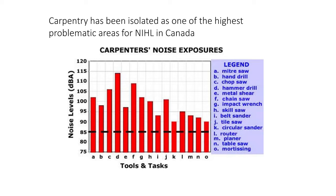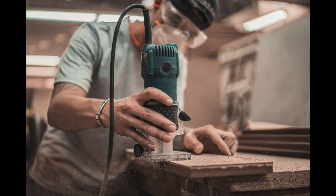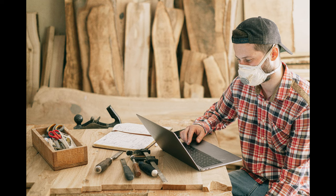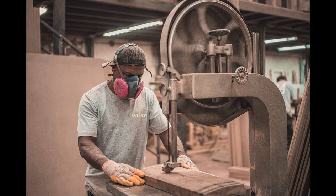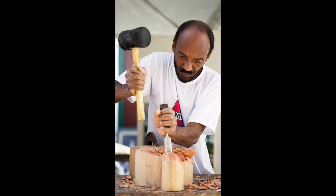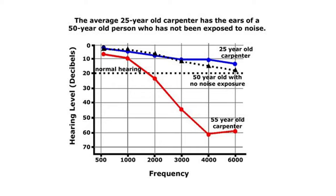Most hearing protection only reduces the decibel level by about 20, so even with PPE you may exceed the limit. If you can't limit tool use, the best approach is to incorporate task variation to reduce exposure time — intersperse periods of loud activities with quieter activities and allow ears time to recover. To illustrate the impact: an average 25-year-old carpenter has the hearing of an average 50-year-old who has not been exposed to noise, meaning approximately eight years of carpentry ages your hearing by an additional 25 years.